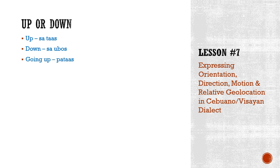If I say going up or going down, the words taas and obos are still there, yet we use a different prefix: pa. Pa-taas, pa-ubos. The pa prefix is used to describe movement — it describes the direction of movement. Going up: pataas. Going down: pa-ubos.